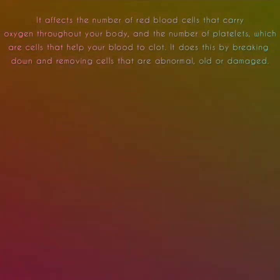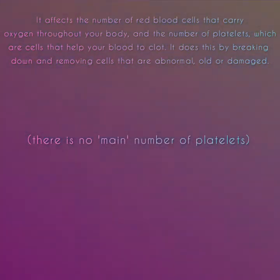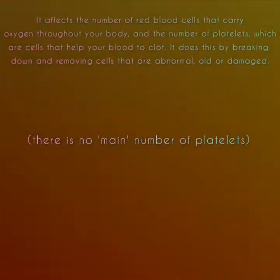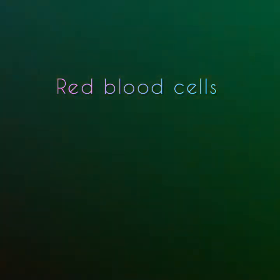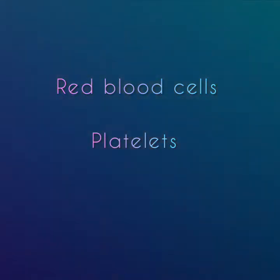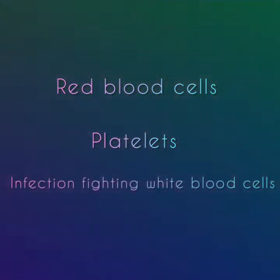It affects the number of red blood cells that carry oxygen throughout your body and the number of platelets, which are cells that help your blood to clot. It does this by breaking down and removing cells that are abnormal, old, or damaged. The spleen also stores red blood cells, platelets, and infection-fighting white blood cells.